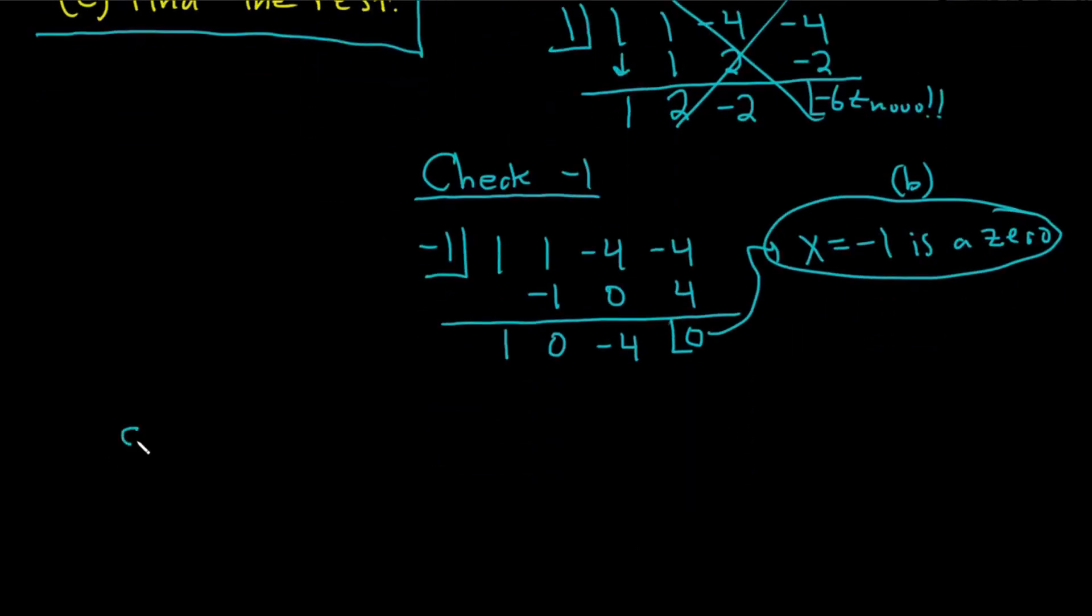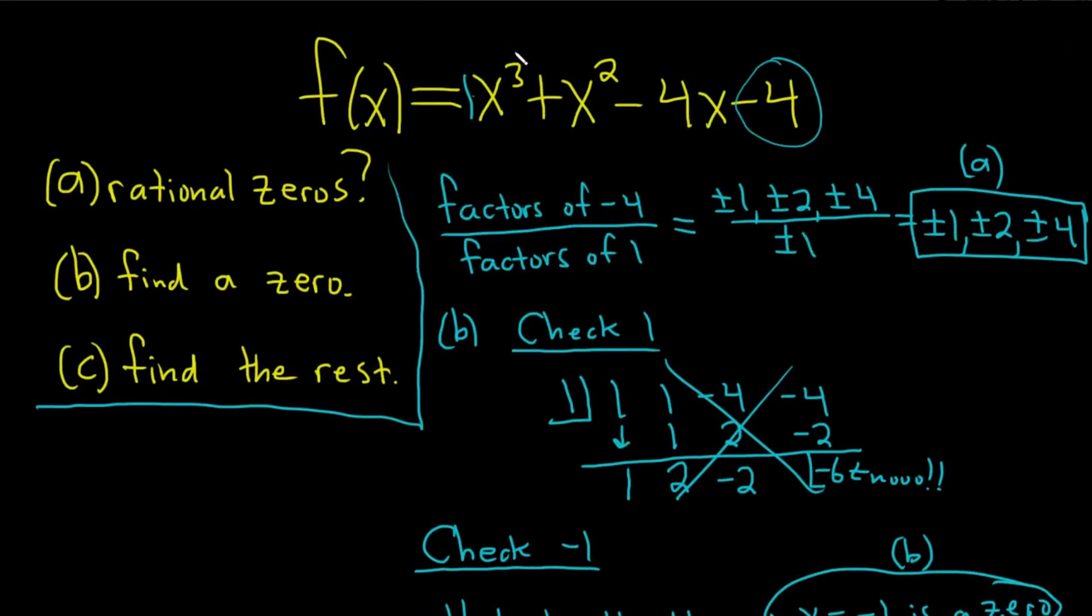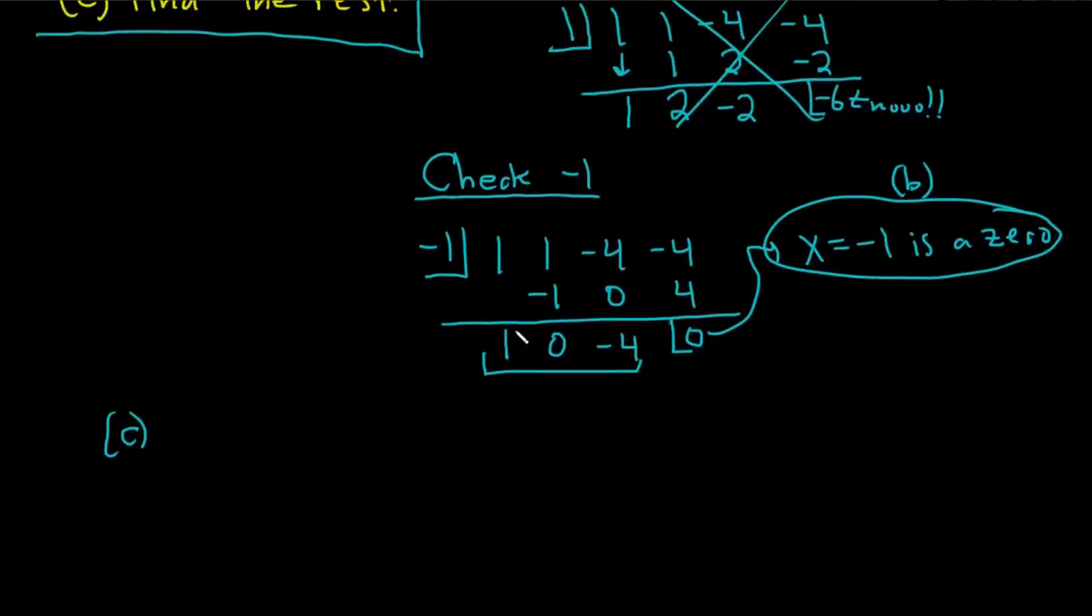For part C, all we have to do is use this. So we started with a cubic function. So it's always going to be 1 less now. So now it's quadratic. So it's 2. So basically, you take this, and these are your coefficients. So it's 1 times x squared plus 0x minus 4. So you just take this and then just set it equal to 0 every time. Always. It's always 1 less. So if that was a 5 up there, this would be a 4. So here we have x squared minus 4 equal to 0.